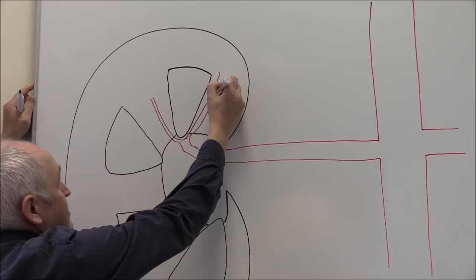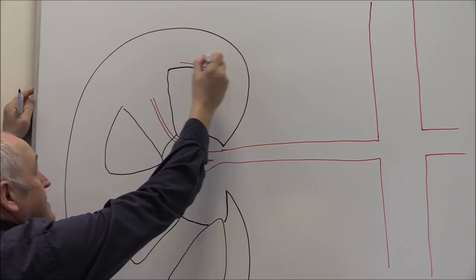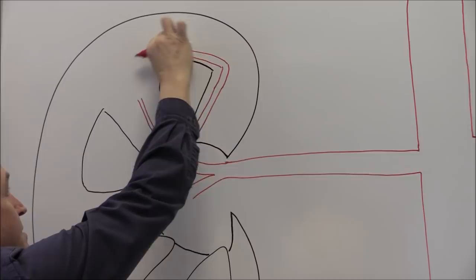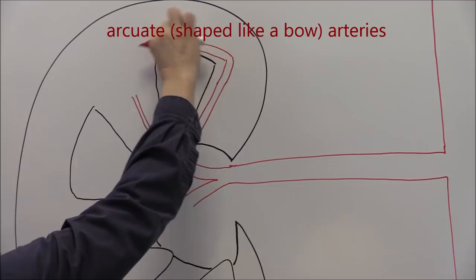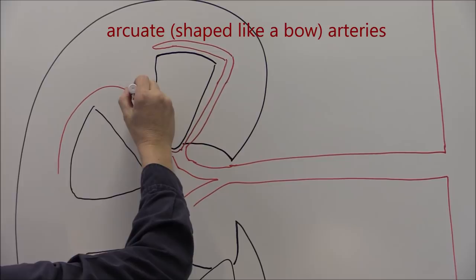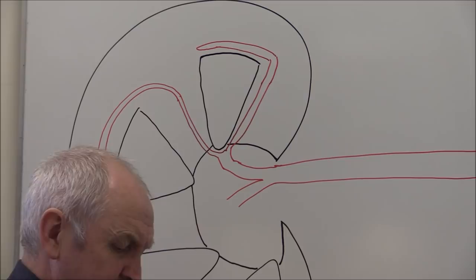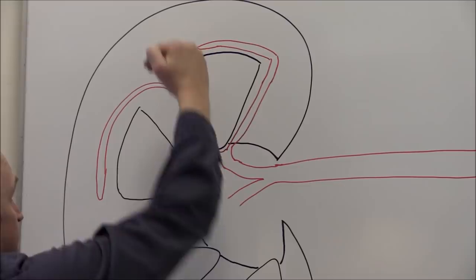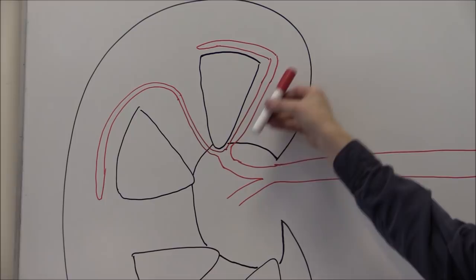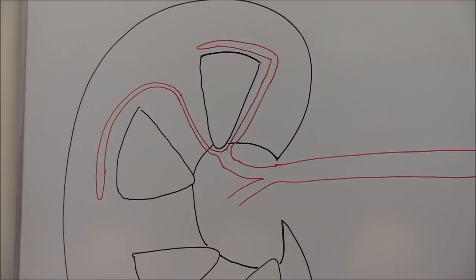The interlobar arteries go up the renal column and then they bend sideways. The arteries that go along the bases are called the arcuate arteries — because they arc over the top of one of the bases. The word 'arcuate' derives from a word meaning bow, as in bow and arrow. So we have the interlobar arteries turning into the arcuate arteries.